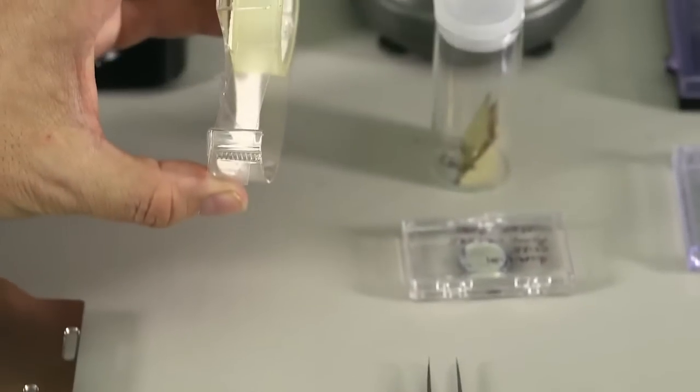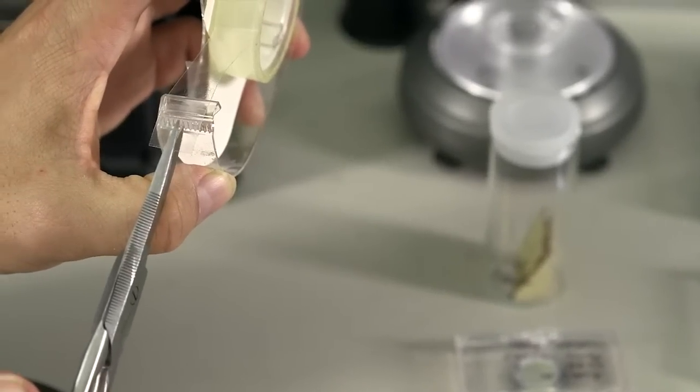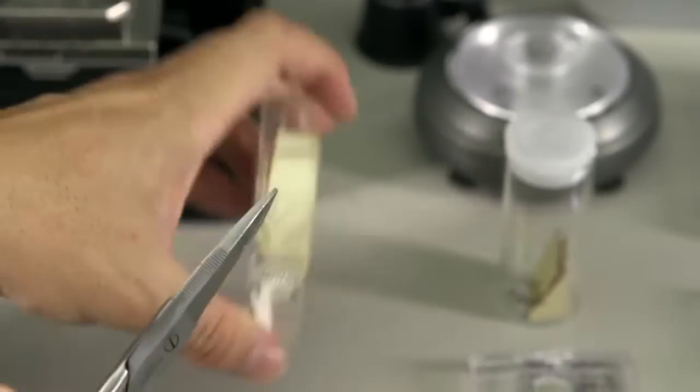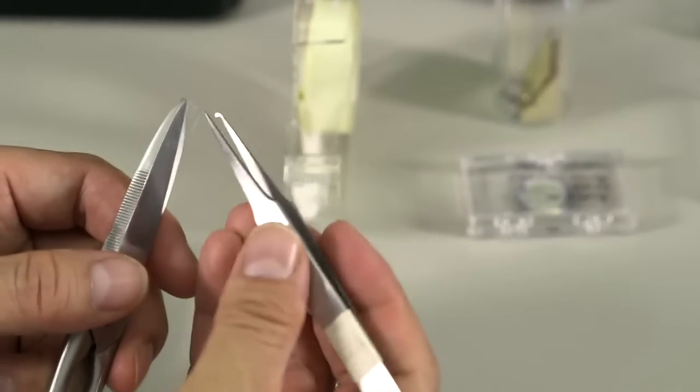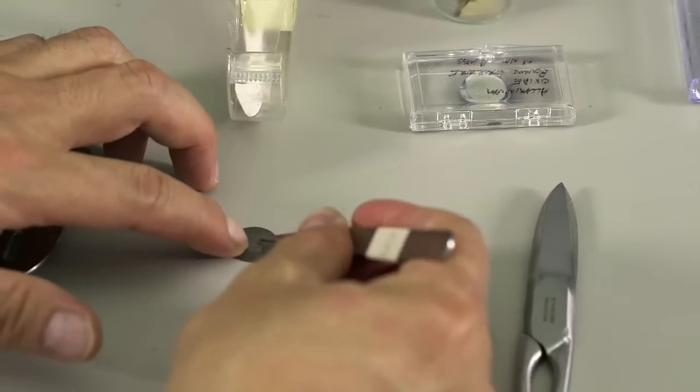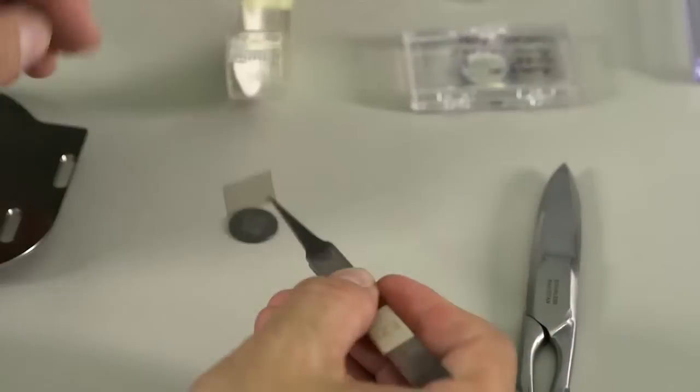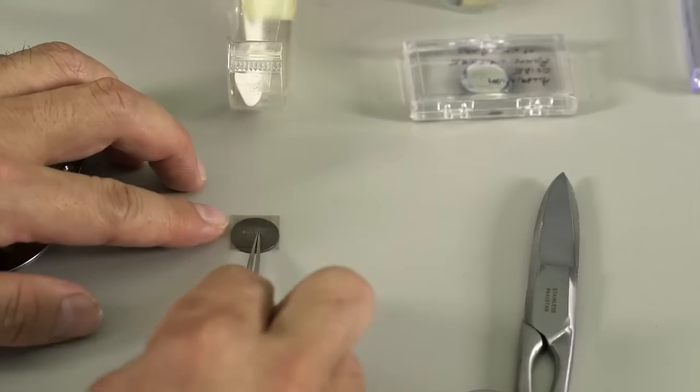First, you cut out a little square from double-sided tape. Put the tape in the center of the steel dish, and you can put your sample on top of the dish and apply pressure.